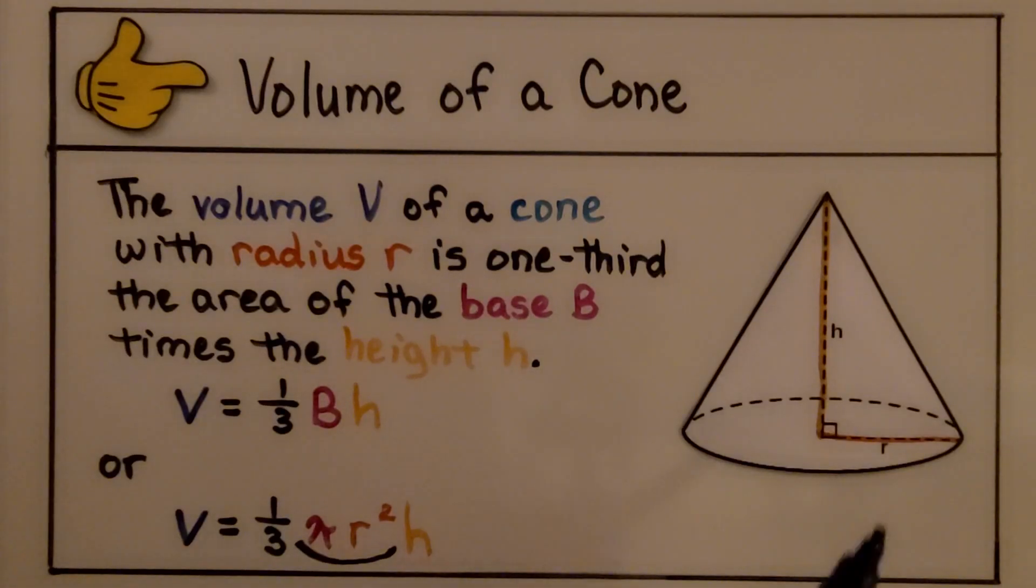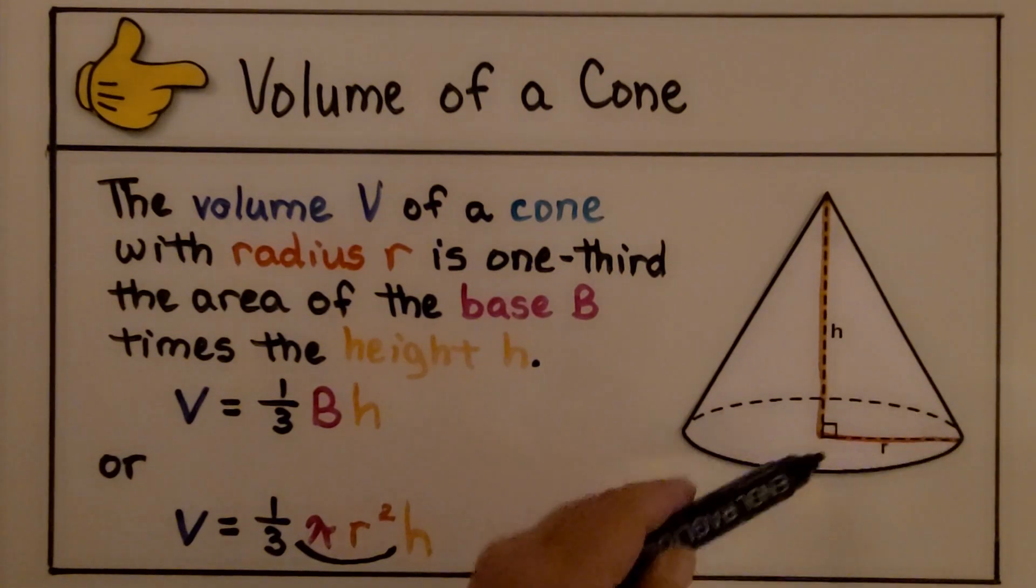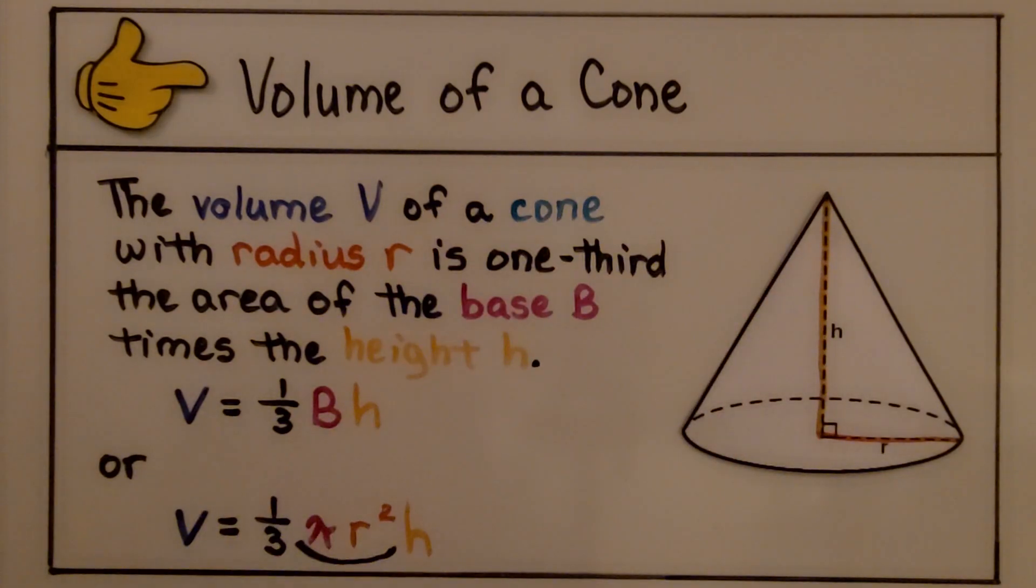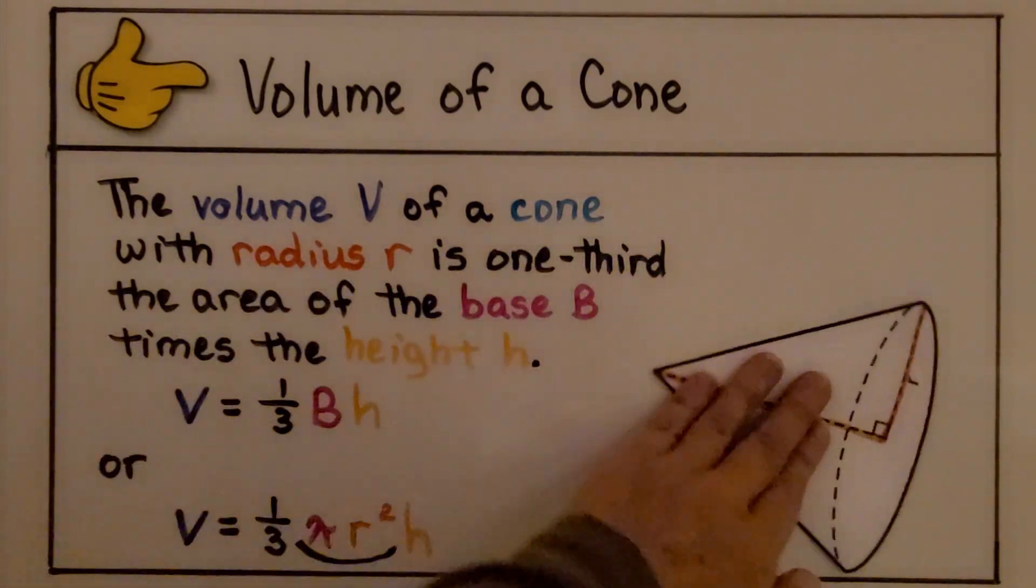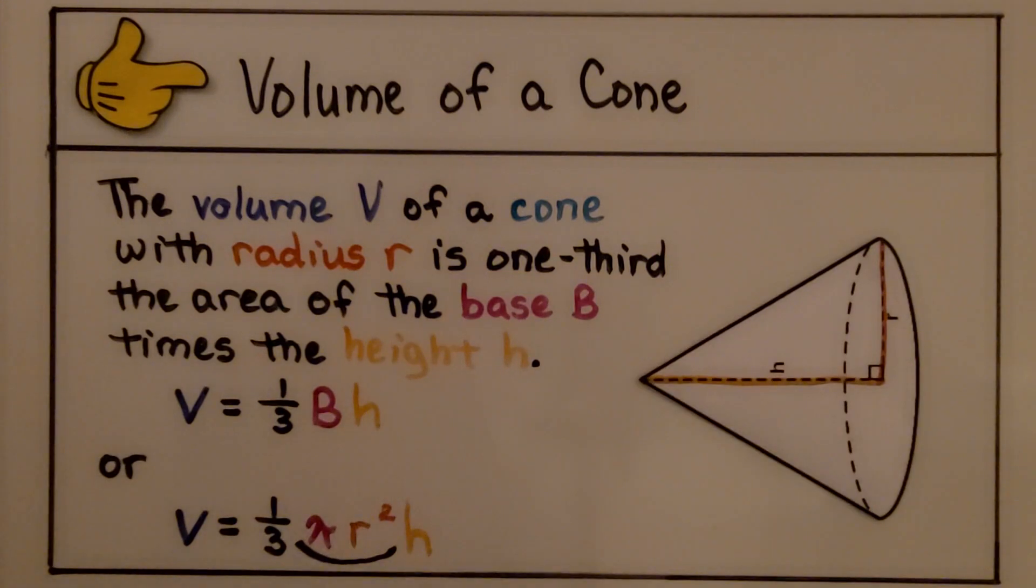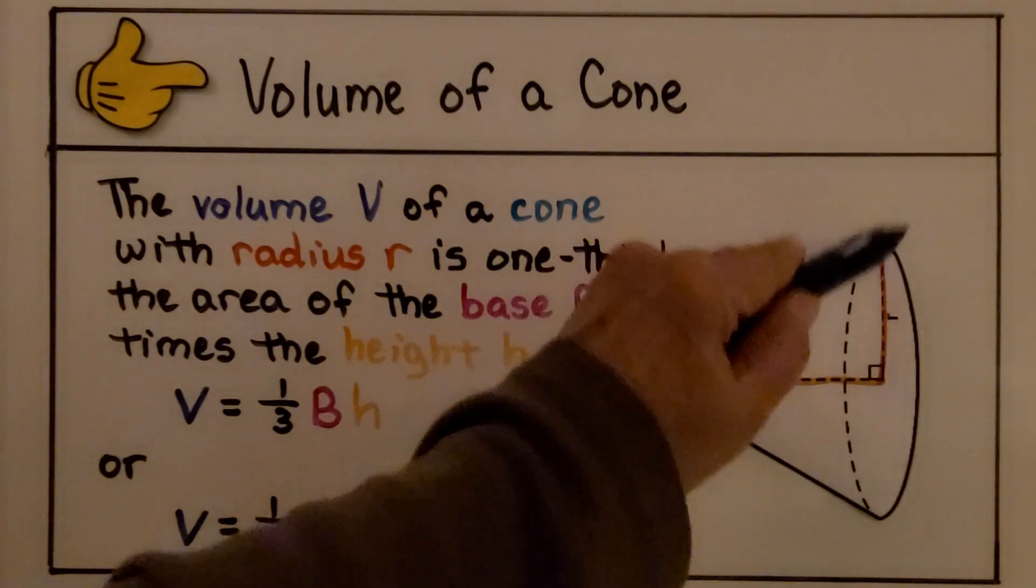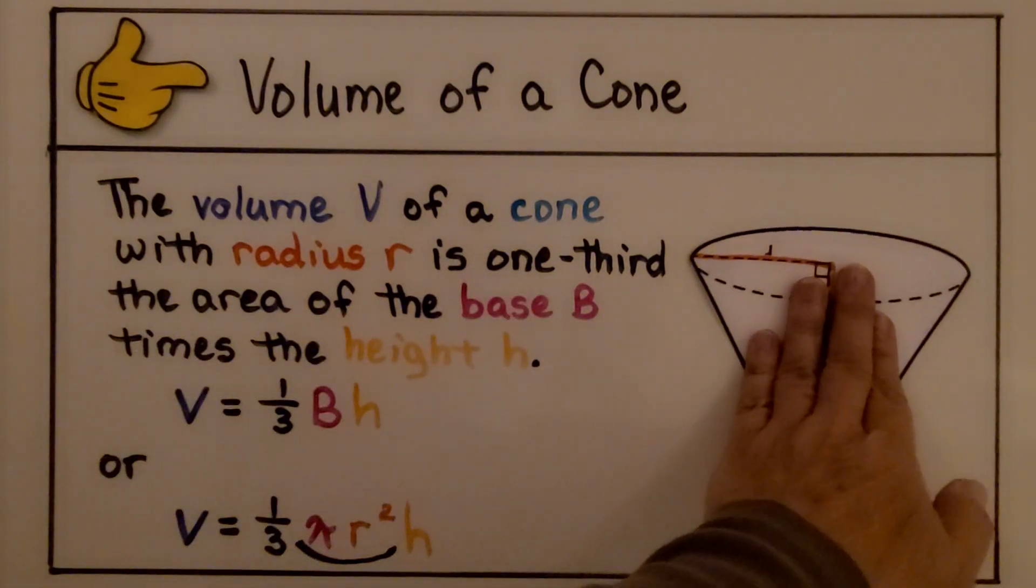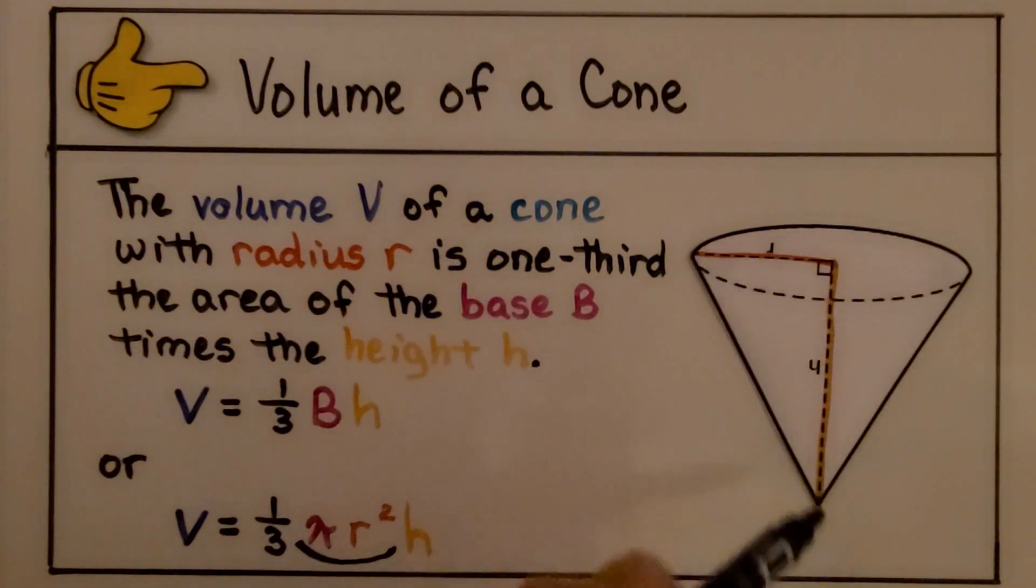Keep in mind that the radius is from the center of the base to one side. And the height goes from the base up to the vertex. It doesn't matter if our cone is facing this way. We still see the radius and that's the height. And it doesn't matter if our cone is upside down. We still see the radius and the height.